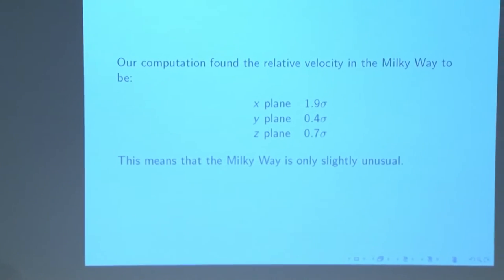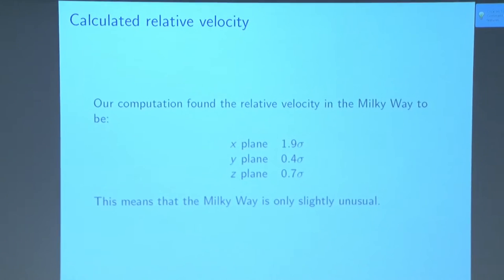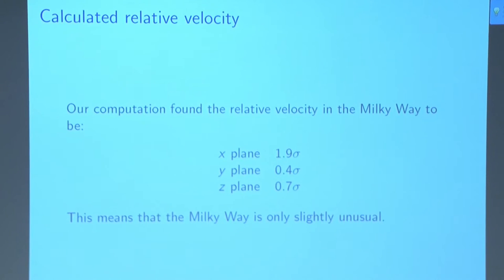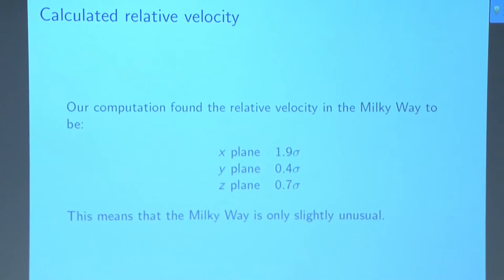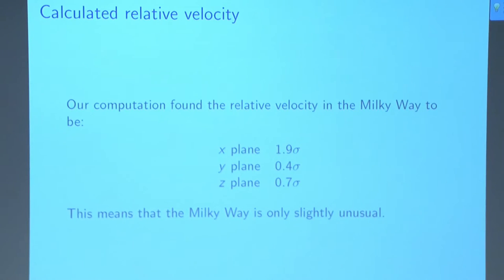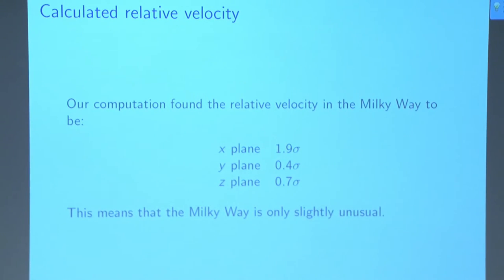In the end we plugged in our 10,000 galaxies and calculated the total relative velocity based on those. The axes show the x, y, and z components of relative velocity in units of sigma, which makes it easier to see how unusual our value is compared to others. The most interesting result is on the x-axis — a sigma value of 1.9 — meaning we're slightly unusual; something a little strange is happening in the Milky Way based on our observations.